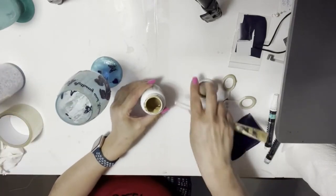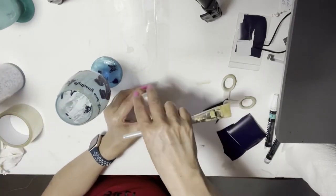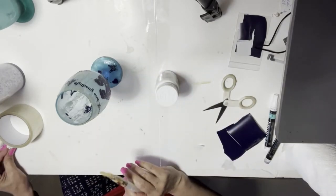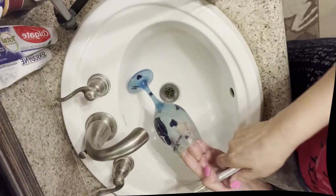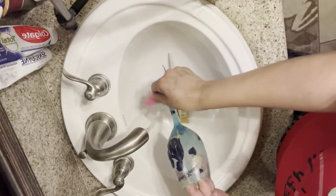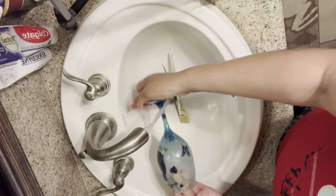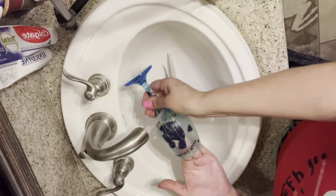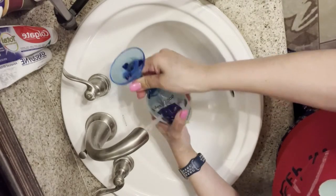Now we're going to take the brush and the glass and let's go to the sink. Here we are. I'm going to make my water a little warm and I'm going to start taking up all the etching cream.